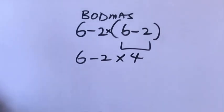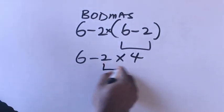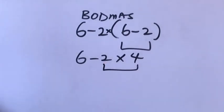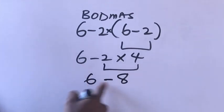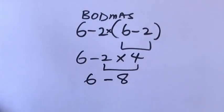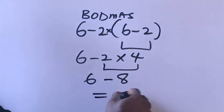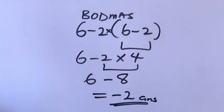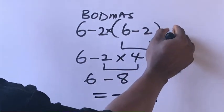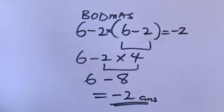So what are we going to do? We are going to solve for this multiplication first. Two times four will give us eight. Six minus eight will give us minus two. So our final answer is minus two.